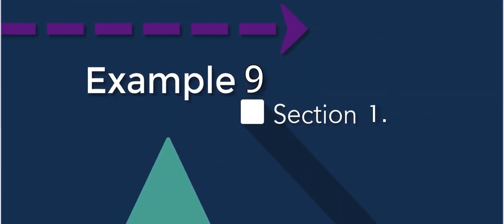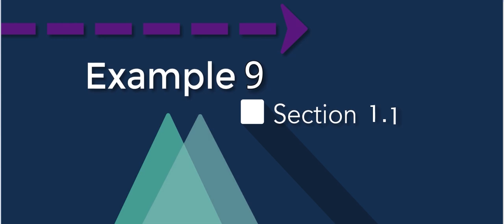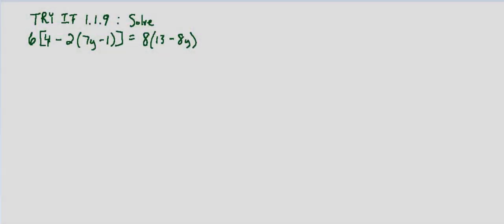We're looking at Try It exercise 1.1.9. Again, we're adding just another step to the process when we have something that's inside multiple brackets. We need to deal with the innermost part first and work our way outward. So in this case,